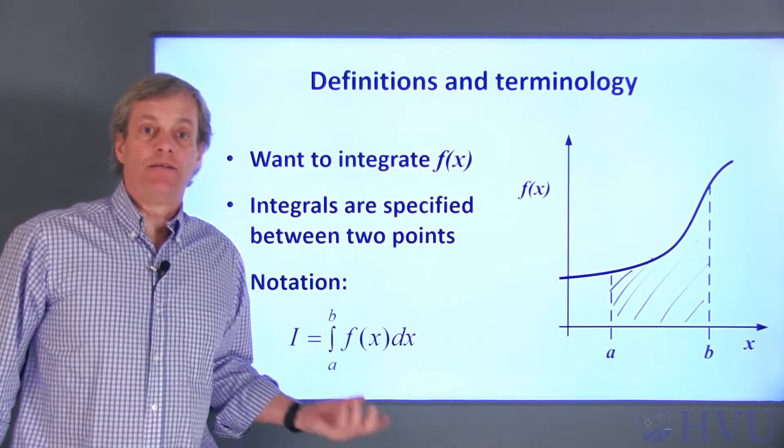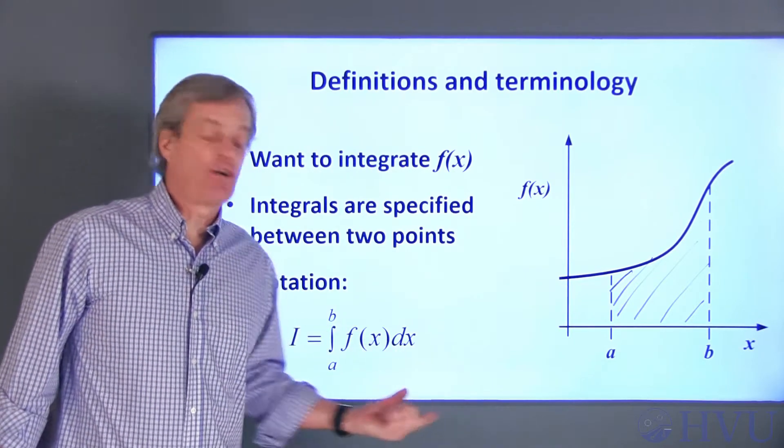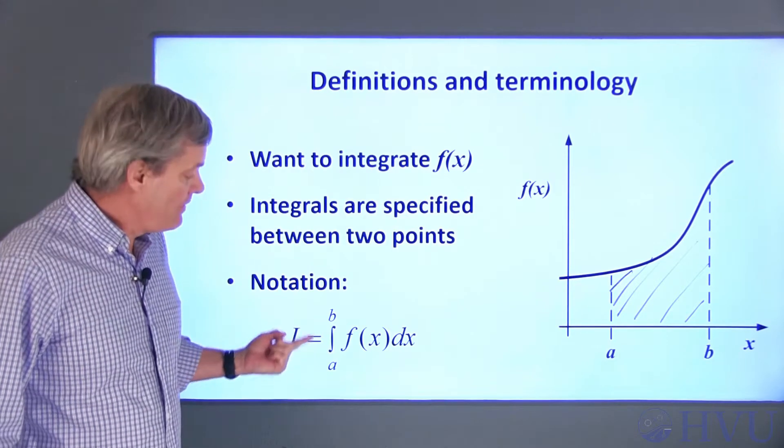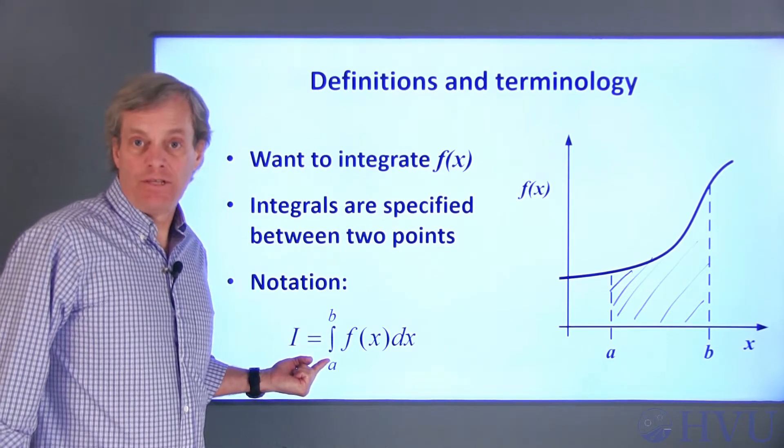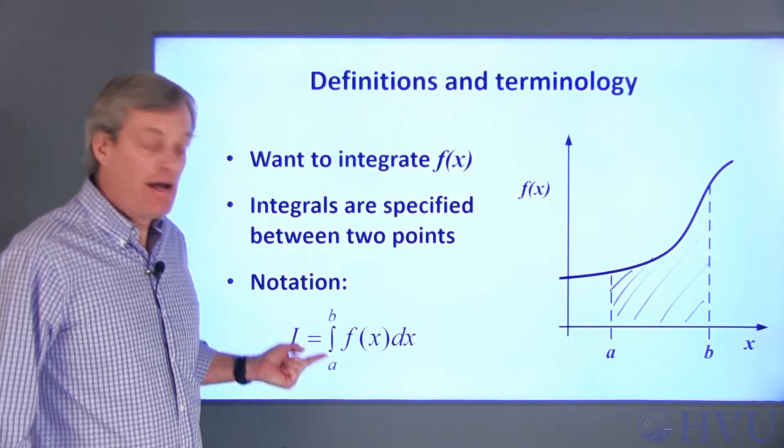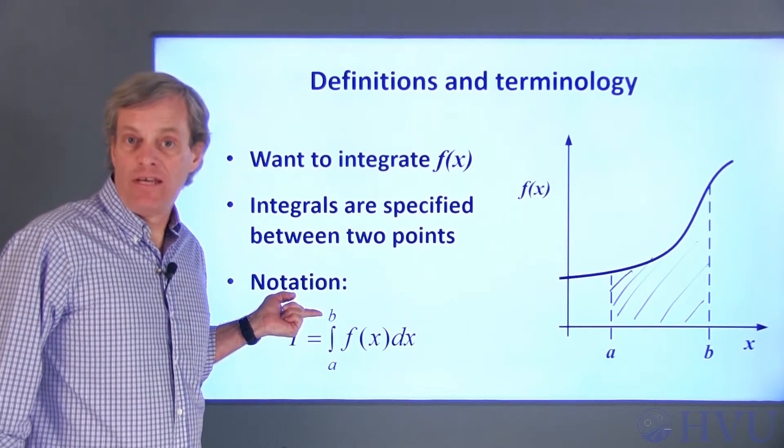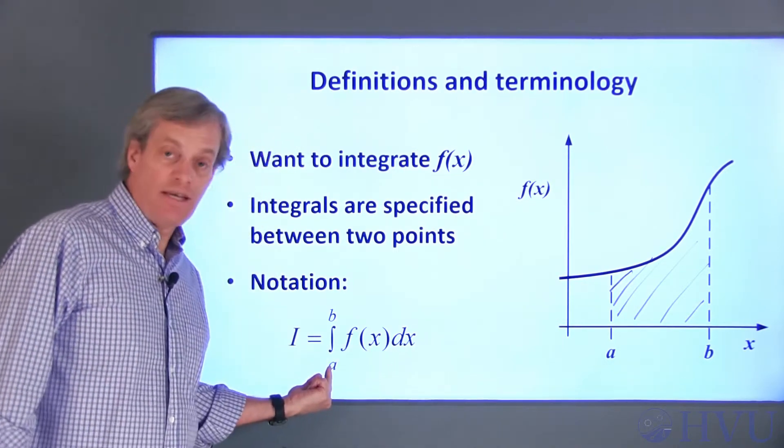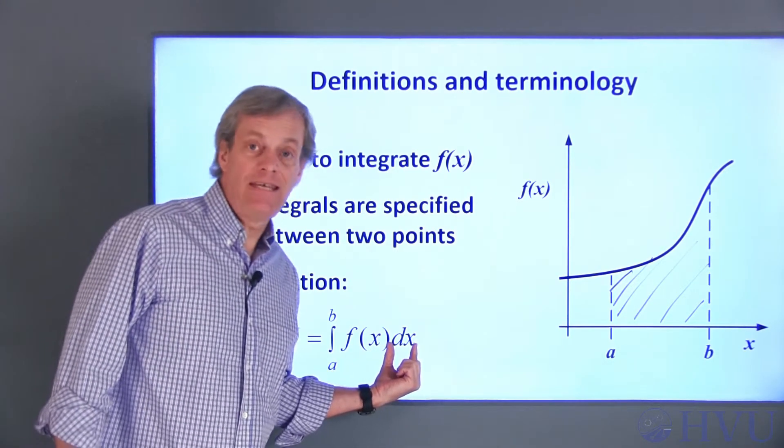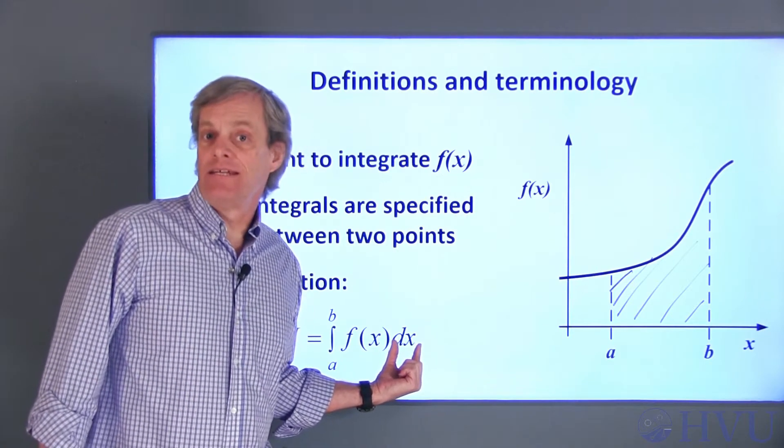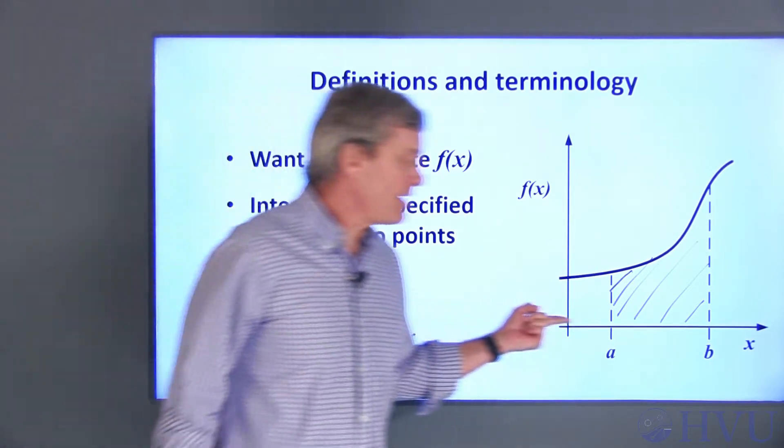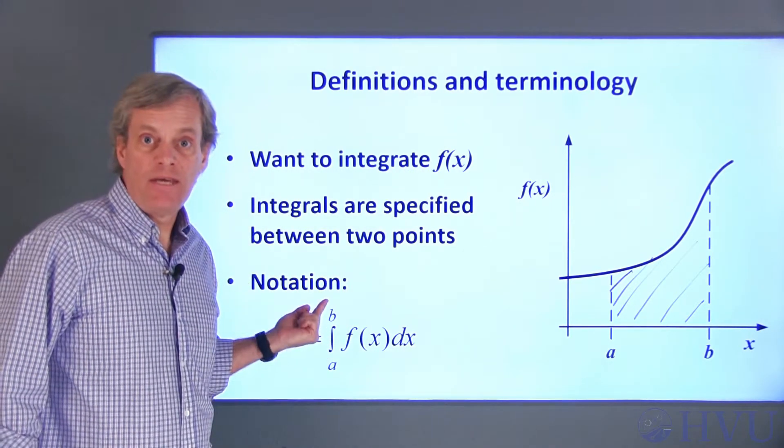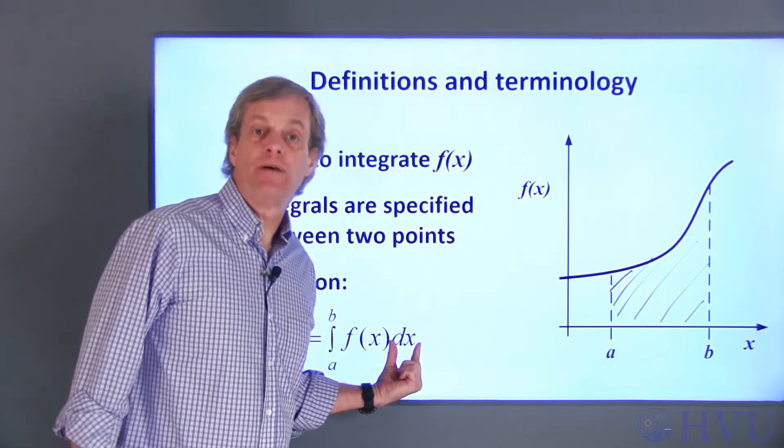Notation wise, the integral of a section of the curve between points a and b is expressed this way. This symbol represents integration. The lower limit of integration is down here and the upper limit is above the integral sign. The function to be integrated, f(x), appears between the integral sign and this dx. The dx indicates that we're integrating with respect to the variable x. This is read as integral from a to b of f(x) with respect to x.